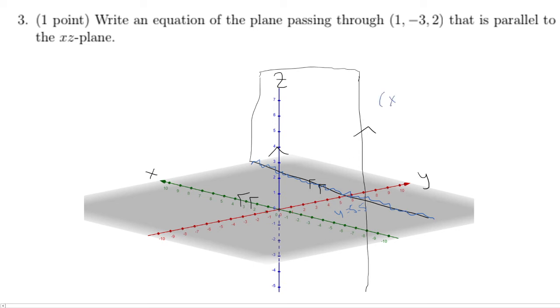So it'll be something like this. You know, x and z will vary wherever you are on this piece of paper. So this would be the equation y equals. And because it has to go through 1, negative 3, 2, y has to be negative 3.